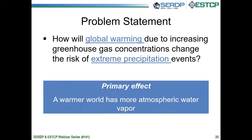The fundamental problem that we face in this particular area is how will global warming, due to increasing greenhouse gas concentrations, change the risk of extreme precipitation events? The primary effect is that a warmer world has more atmospheric water vapor. That's not the whole story, but that's the major one.